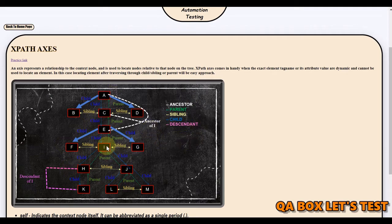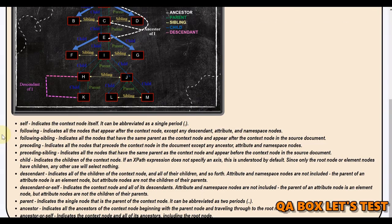We have a context node and we are going to traverse this tree from that node. There are 13 axes in total in XPath, but we are going to work on 11 of them.